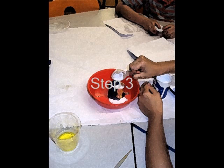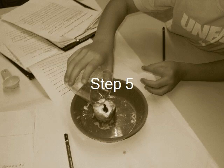Step 3. Put one tablespoon of baking soda in the volcano. Step 4. Put in four drops of red food coloring. Step 5. Put in four drops of dishwashing soap.